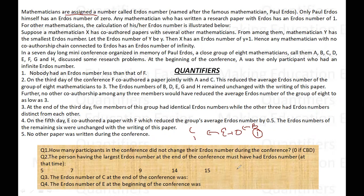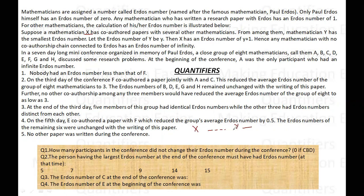Suppose a mathematician X has co-authored papers with several other mathematicians. Among them, mathematician Y has the smallest Erdős number. Then X gets Y plus one as their Erdős number — a very simple rule.